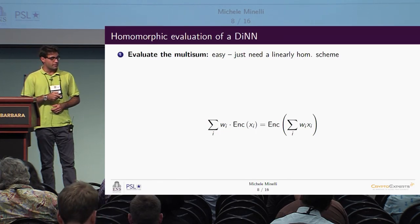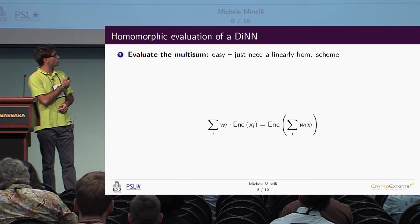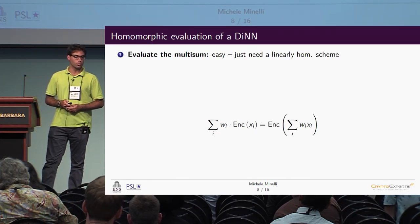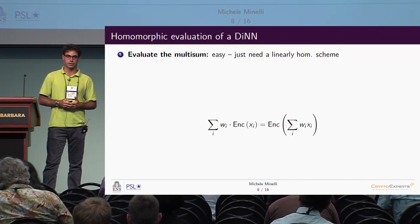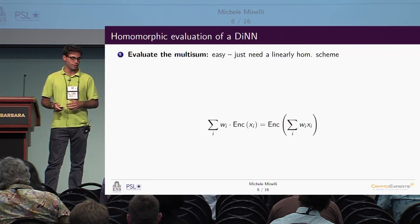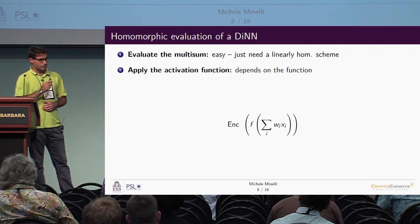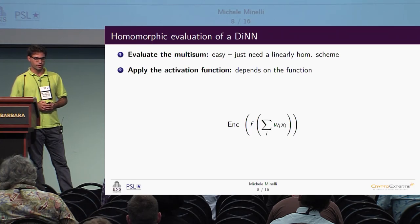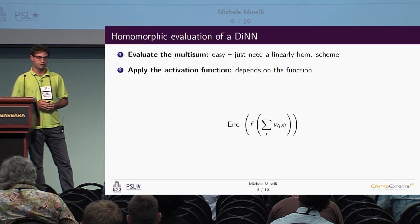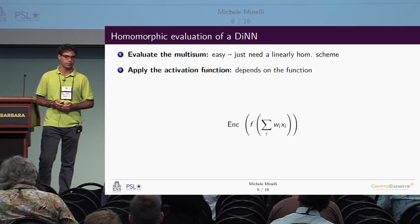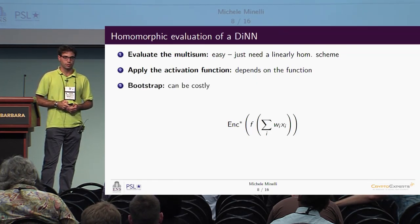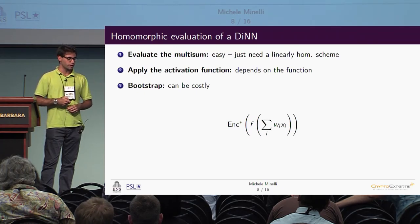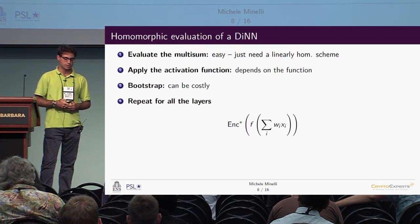Once we have a DNN, how do we homomorphically evaluate it? First, we evaluate the multisum — this is easy because we just need a homomorphic encryption scheme that supports linear operations. Then we apply the activation function, which is the tricky part depending on which function we choose. Then we bootstrap to refresh the ciphertext and be able to continue computing, and repeat this process for all layers of the network.